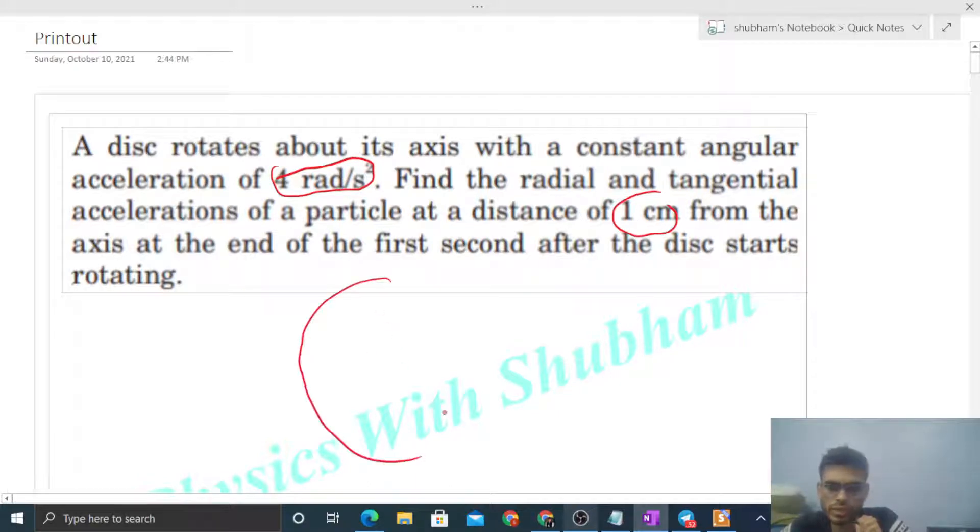Fine. So there is a disk, right, and it is rotating about its axis and there is a point which is at a distance of 1 centimeter from the axis. Let's say this point is P. So we have to find out tangential and radial acceleration of this point after one second when this disk starts rotating.